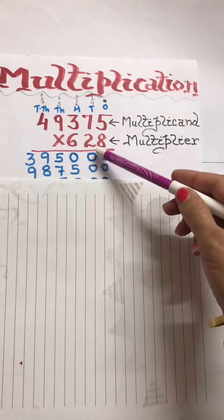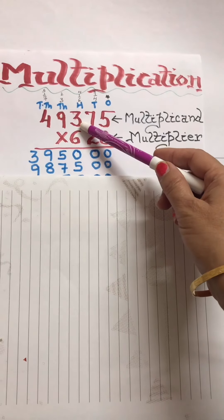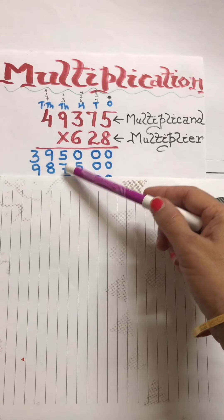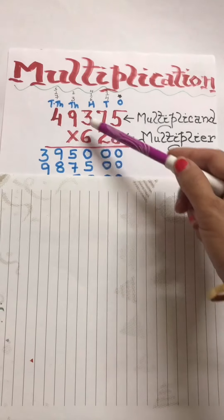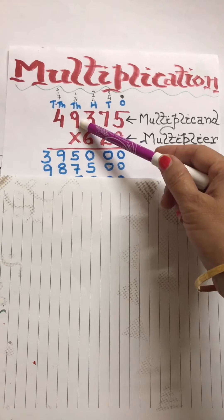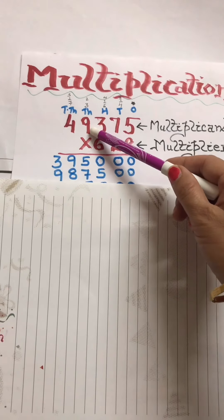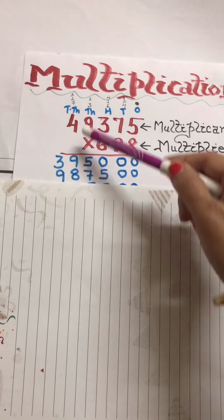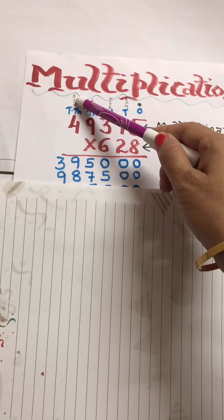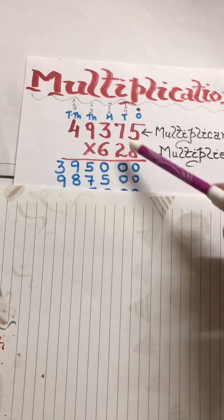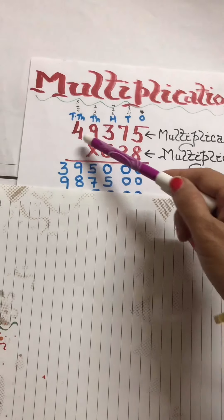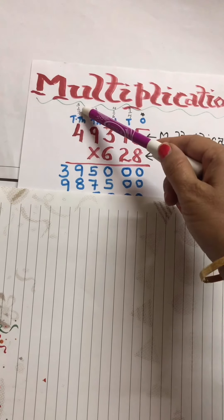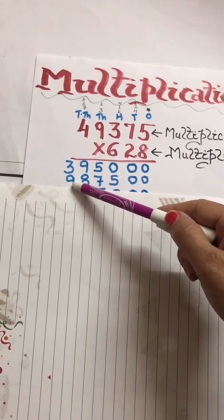2 times 3 is 6, plus 1 carried over makes 7. 2 nines are 18, so you will write 8 with 1 carried over. 2 fours are 8, and 8 plus 1 makes 9.